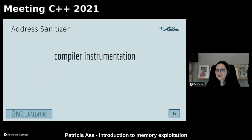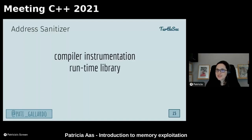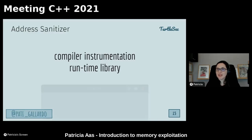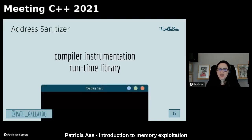What is AddressSanitizer? AddressSanitizer itself is compiler instrumentation of the binary. It inserts instructions generally before loads and stores. In addition, there's a runtime component that records debug information used when an error occurs — like stack traces from when memory was allocated, when it was deallocated, when it was used after free. It also instruments what is often called shadow memory. The runtime library is basically a malloc replacement.